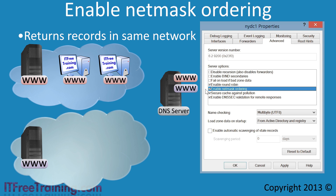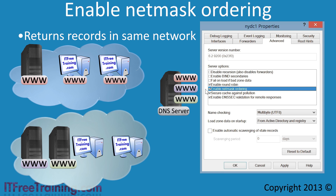Net mask ordering and round robin do work together. If I add a third web server to the second network and 2 desktop computers to that network, when the first desktop asks for the www server, the DNS server will attempt to give it a record in the same network. However, when the second desktop queries the same name, round robin will kick in because there are 2 records in the same network, directing it to the second web server. If multiple clients query www and net mask ordering cannot match the network, round robin will cycle through all 3 DNS records in turn. On most networks it is a good idea to leave round robin and net mask ordering on.